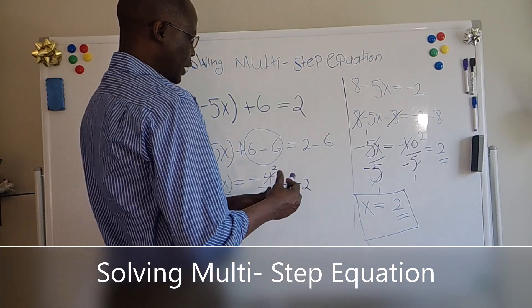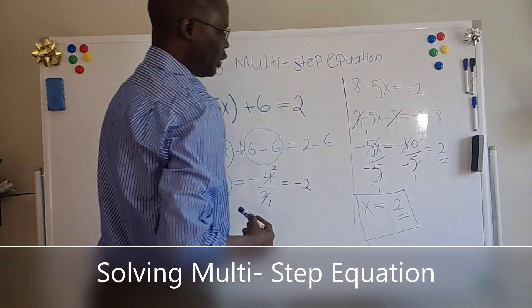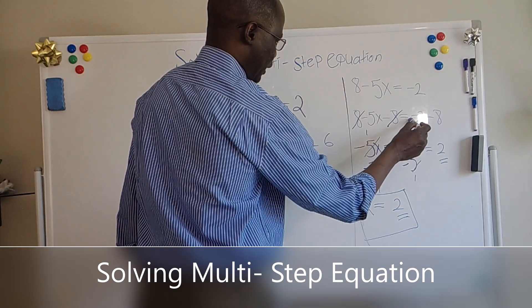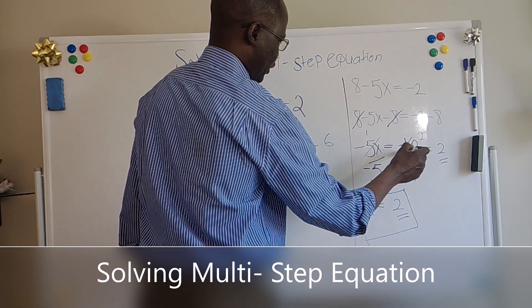And what we've done here, we're going to subtract 8 from both sides of the equation. So this one becomes 0. When we have minus 2 and minus 8, it becomes minus 10.